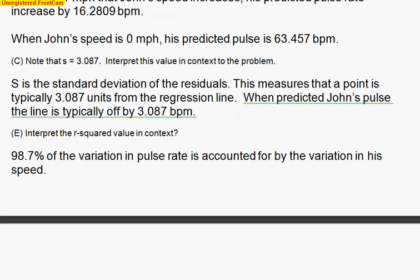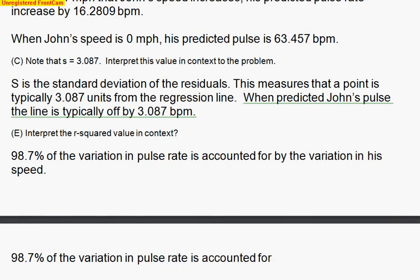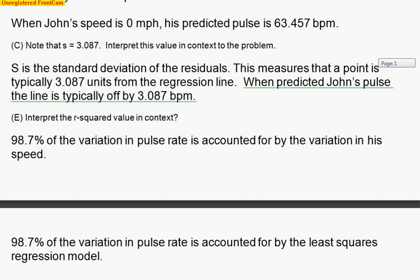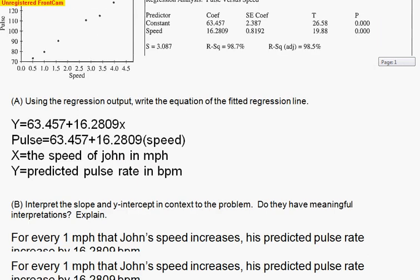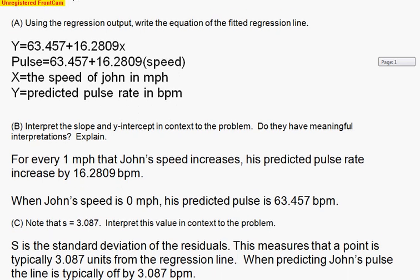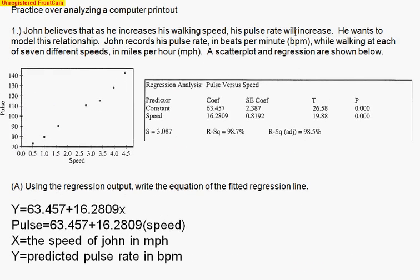Another way we could say this, if we really wanted to, is 98.7% of the variation in pulse rate - so it starts off the same - is accounted for by the least squares regression model. So it's actually saying that 98.7% of the variation in the Y is accounted for by the actual line itself. Either way you write that is totally acceptable. You do not have to write both, you just need one of them. So hopefully that makes sense. And those are some very common questions. I'm telling you guys right now, on your test, you're going to have a very similar looking computer output. And you're going to be asked some very similar questions. Don't forget to define your variables. Don't forget to proofread and make sure that it really does make sense in context, talking about John, his pulse, and his speed. All right, that's it.